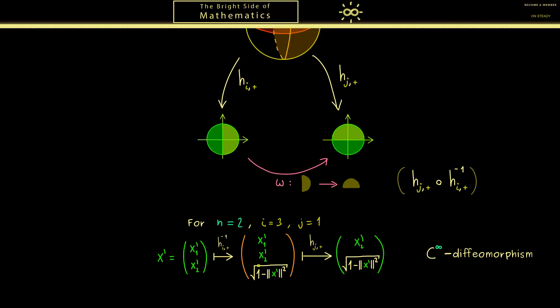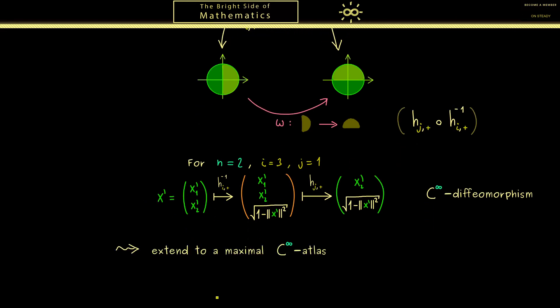Of course, this is a very important conclusion here. And you should see this works no matter which dimension we choose and which combination of i and j we choose. Or to put it in other words, all transition maps omega are C^∞ diffeomorphisms. So what we have is a C^∞ atlas. Therefore, the only thing that is left to do is to extend this C^∞ atlas to a maximal C^∞ atlas. And then by definition we have a C^∞ smooth manifold. And with this we have seen our first example of a smooth manifold, and this was also not so trivial.